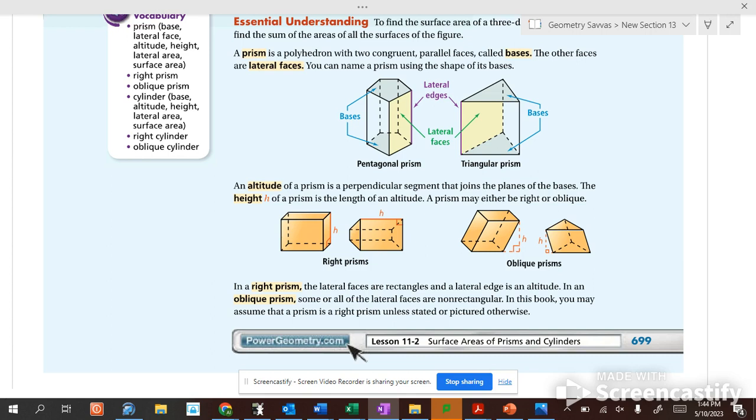So when you paint just the walls, the walls are the lateral faces. So if you add up all the areas of the lateral faces, that is the lateral area. Now, if you add on the bases to that, if you add on the ceiling and the floor, then we're talking about the surface area. All the area inside.